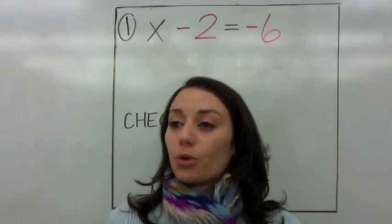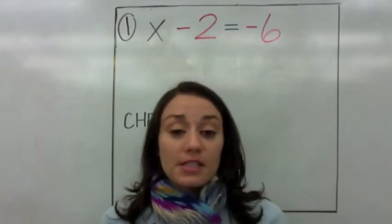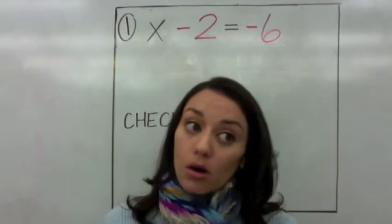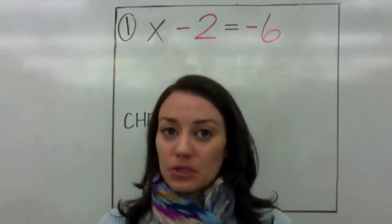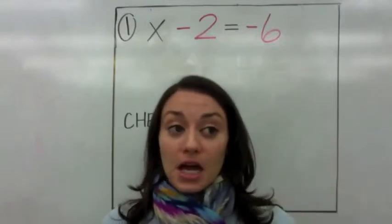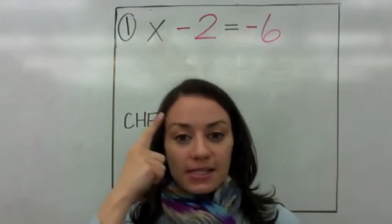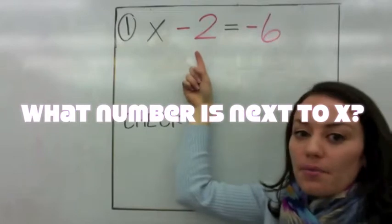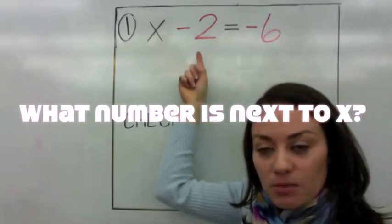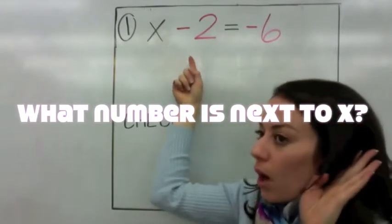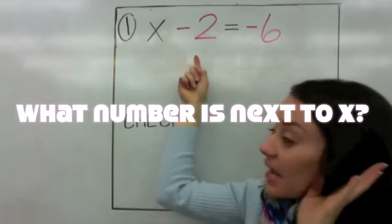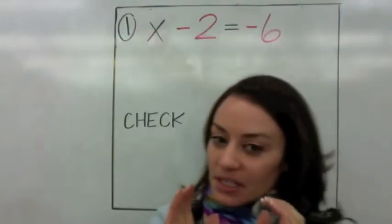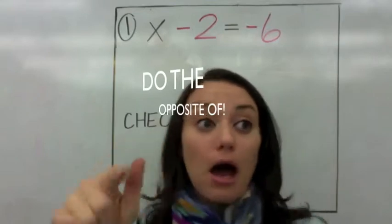So today what we're going to do is we're going to be solving some equations where you have to add a number to both sides or you have to subtract a number from both sides. You need to decide, and you make that decision based on what number is next to x. Because whatever number is next to x, you're going to do the opposite of.